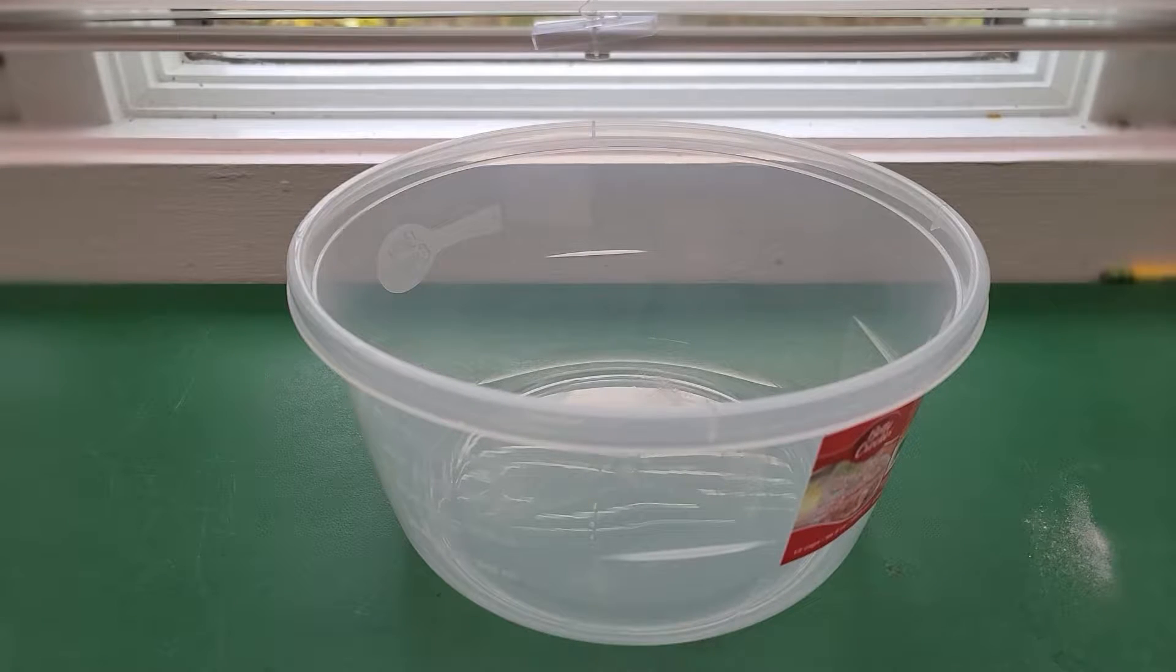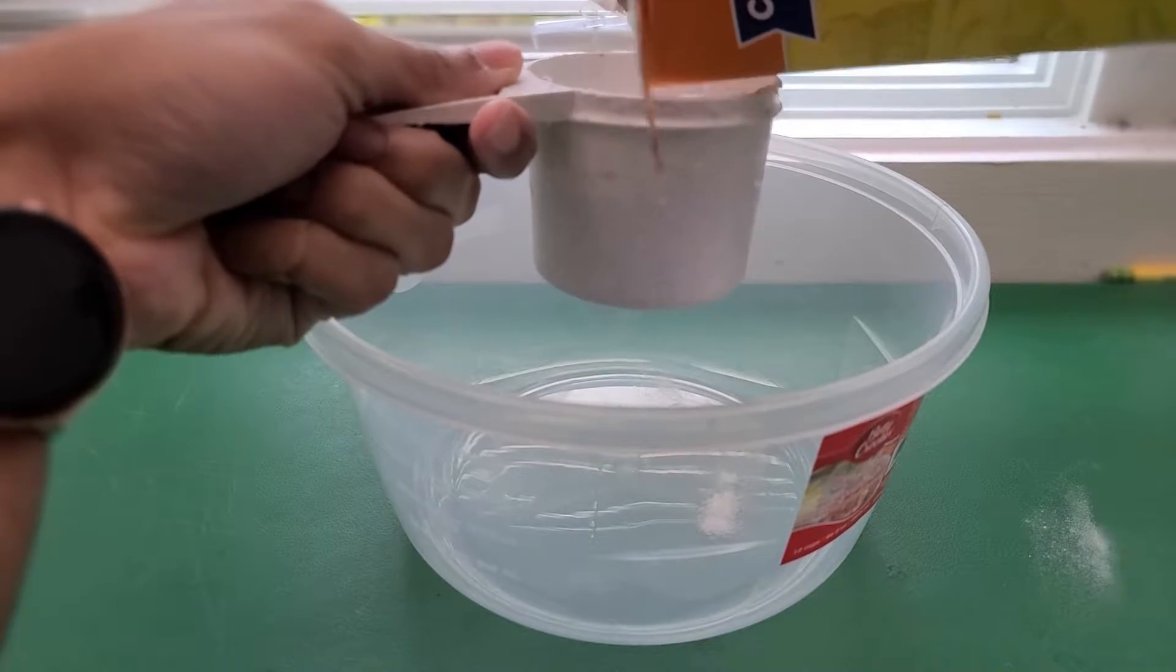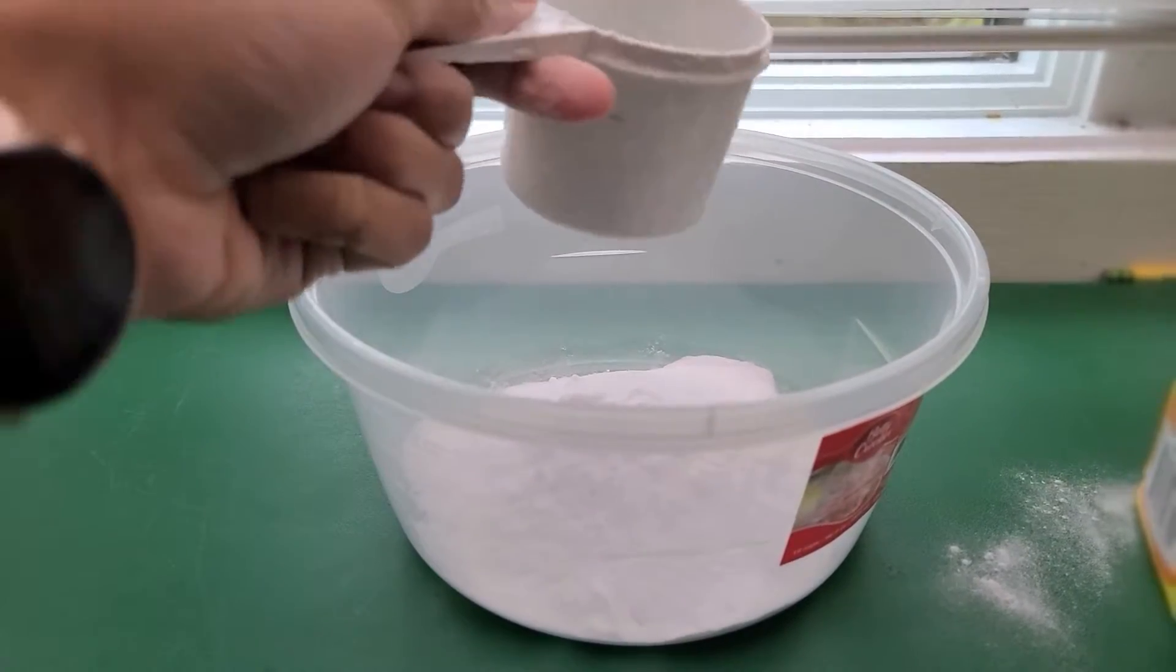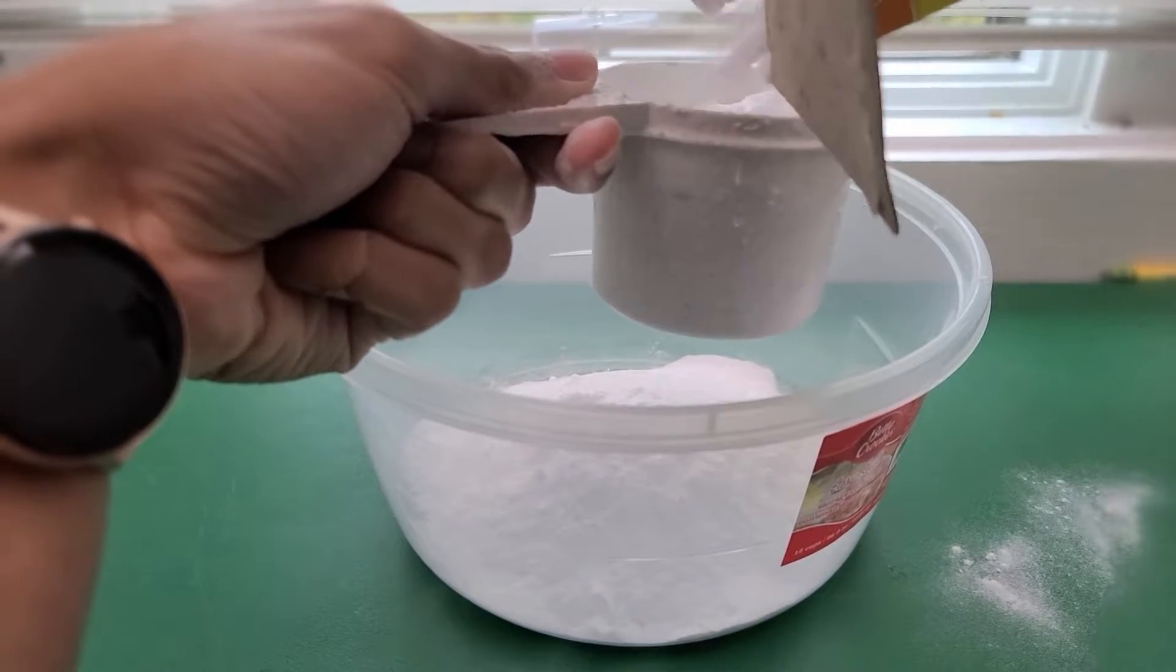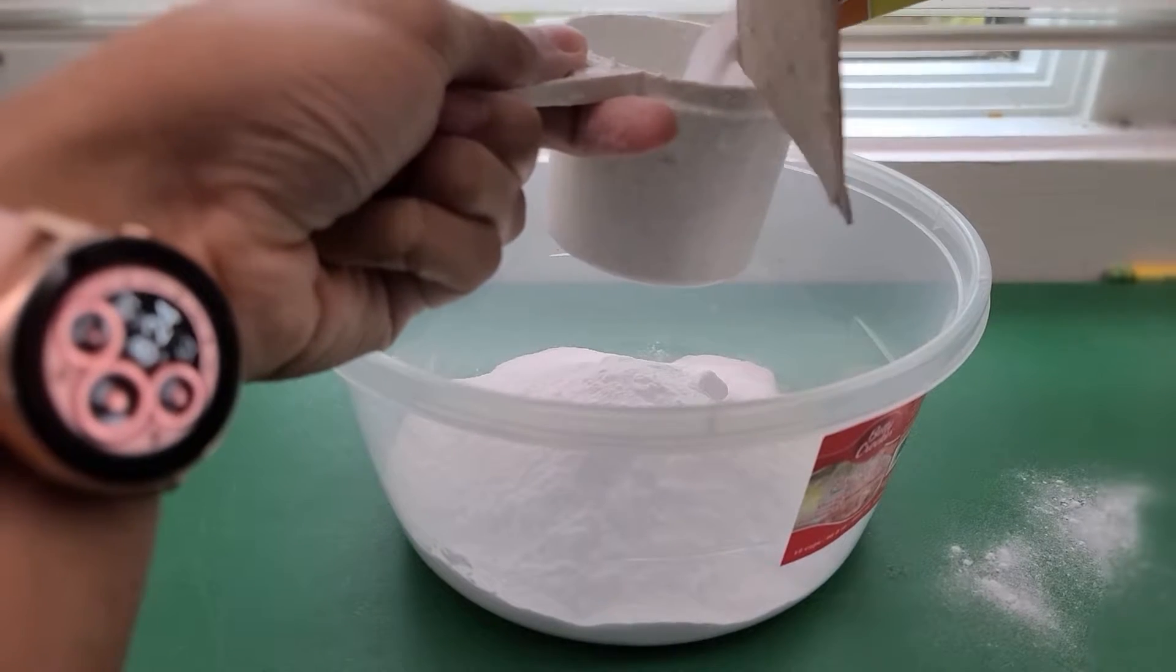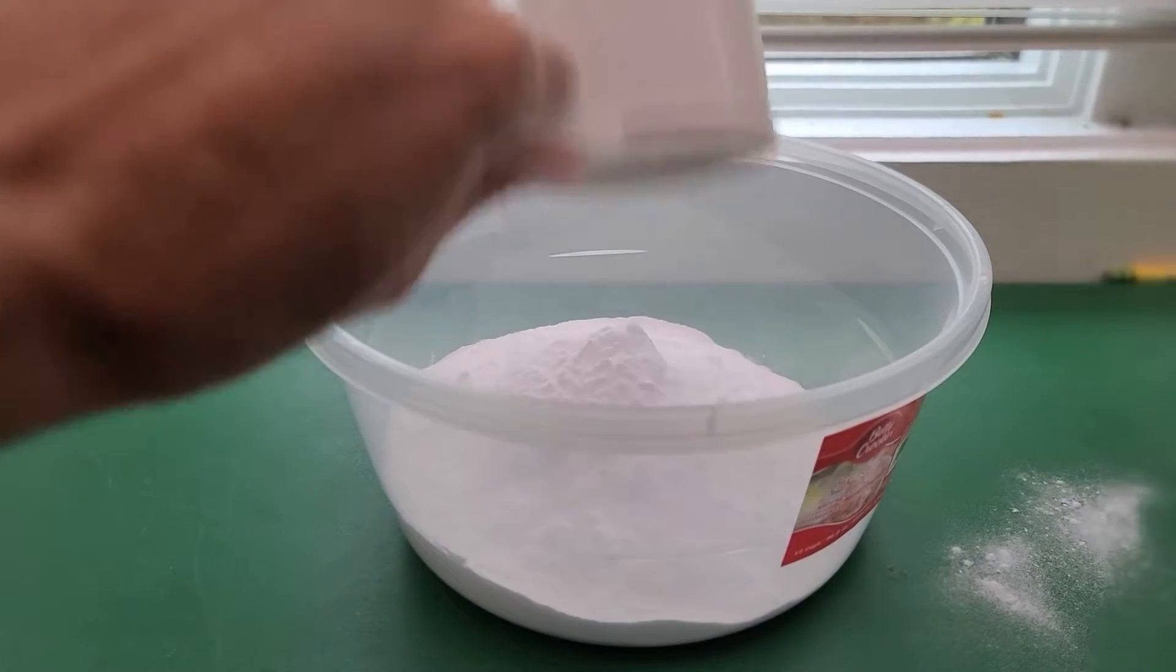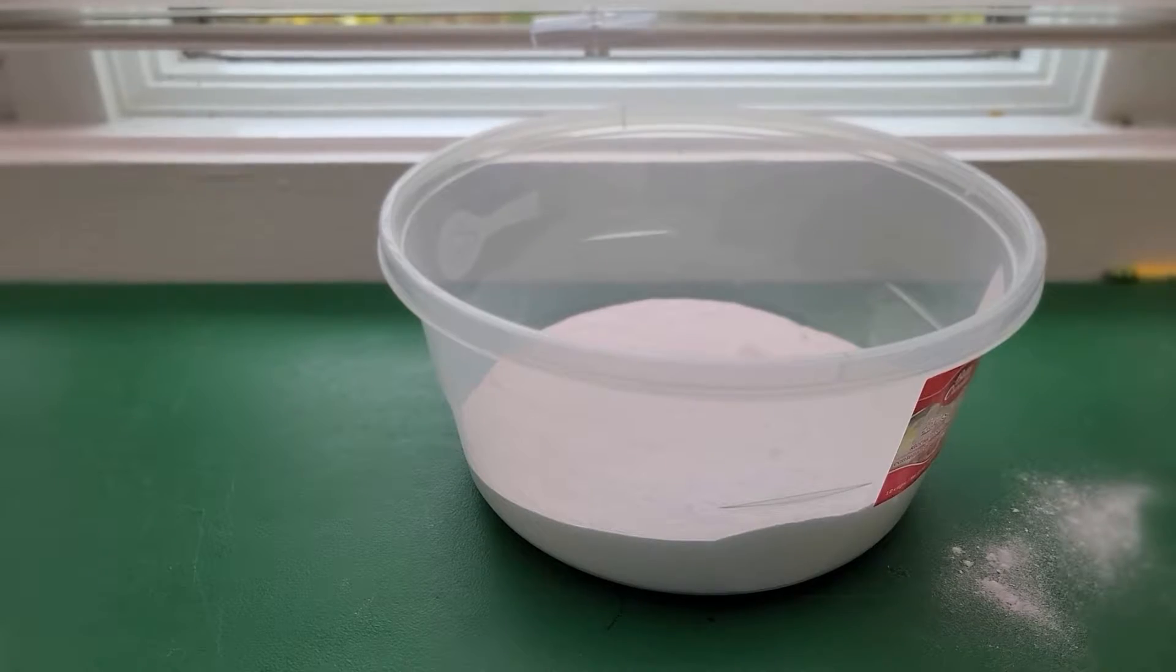The first thing that we want to do is measure out three cups of baking soda. This is going to be a little too much but that's okay. So that's about one, all right get another cup, that's two, and then the last one. Three. All right so we have three cups of baking soda.